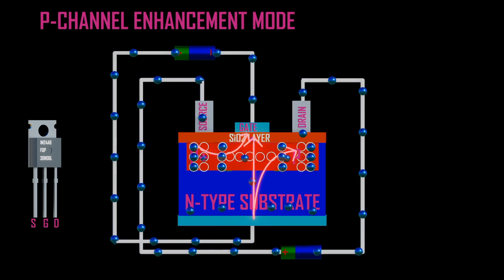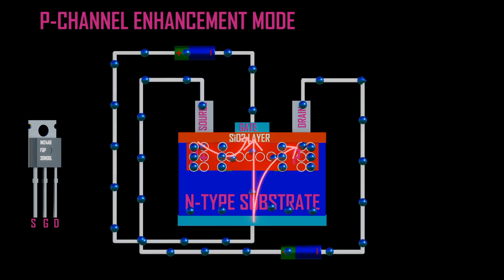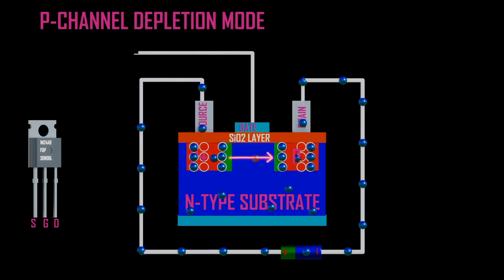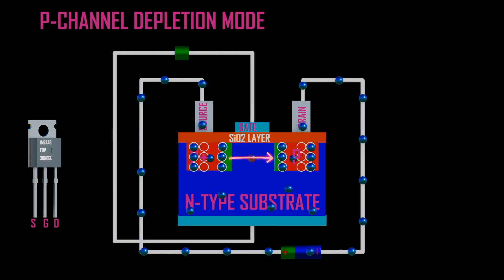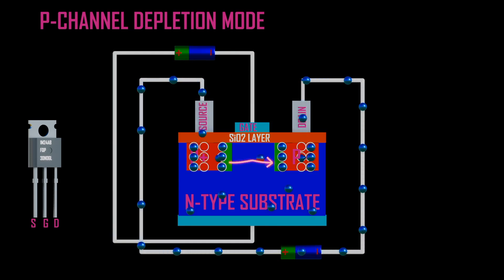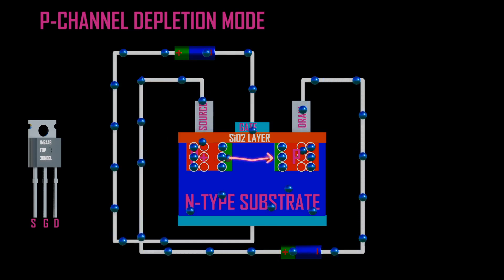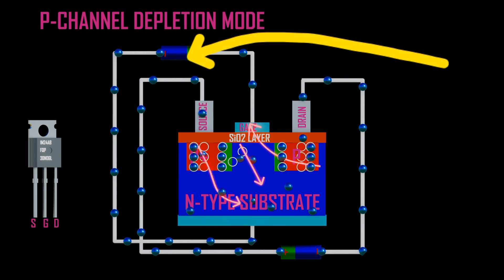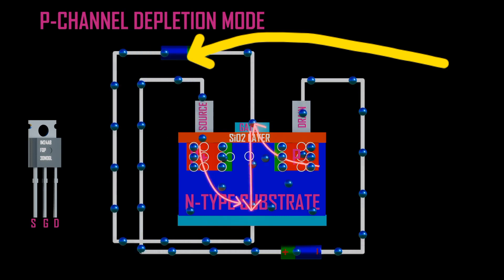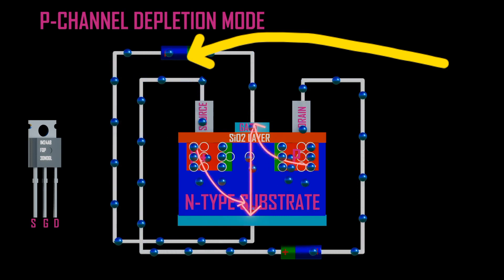When the potential at the gate is reversed, the electric field formed from the gate terminal is reversed, hence electrons move towards the base. This facilitates a decrease in the number of holes in the channel, hence called depletion mode, since holes have been depleted in the channel.